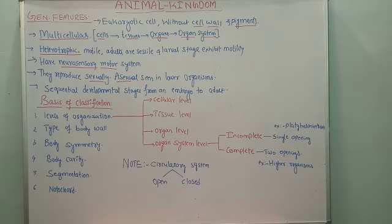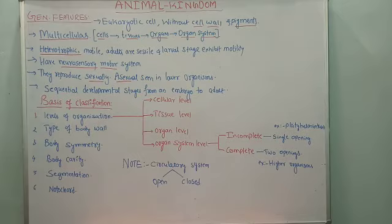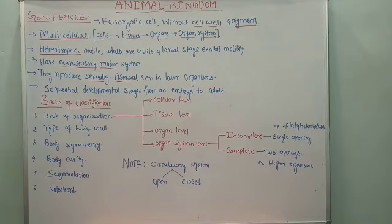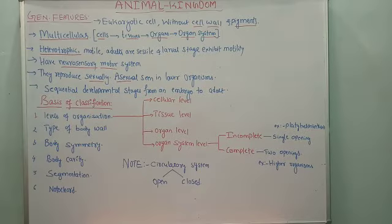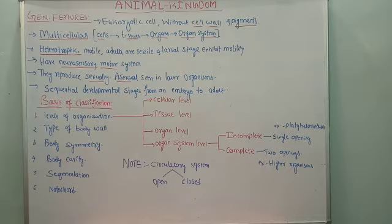The last characteristic feature of the animal kingdom is that we come across sequential development of stages — first the egg stage, then the larva stage, then the adult stage. Thus the embryo undergoes different developmental stages to attain the adult stage. This is also called metamorphosis. Metamorphosis refers to the sequential, orderly developmental stages of the embryo — from egg to larva to adult — that are observed during embryonic development.